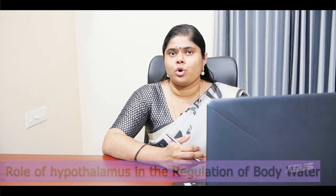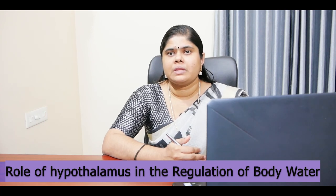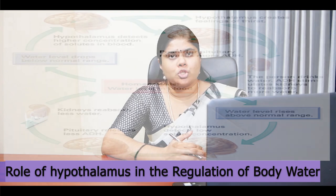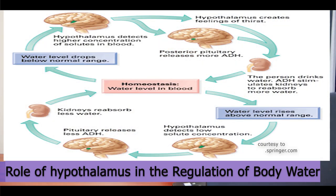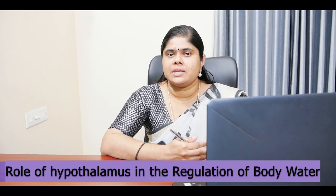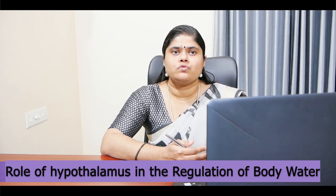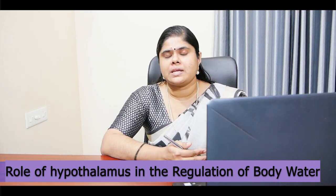Next, let us see the role of the hypothalamus in the regulation of body water. The hypothalamus regulates body water in two ways: either by creating the sensation of thirst, which makes the animal or person drink water, or by controlling the excretion of water into urine. An area called the thirst center is located in the lateral hypothalamus. When the fluid electrolytes in or near this center become too concentrated, the animal develops an intense desire to drink water and will seek out the nearest source, drinking enough to return the electrolyte concentration to normal.